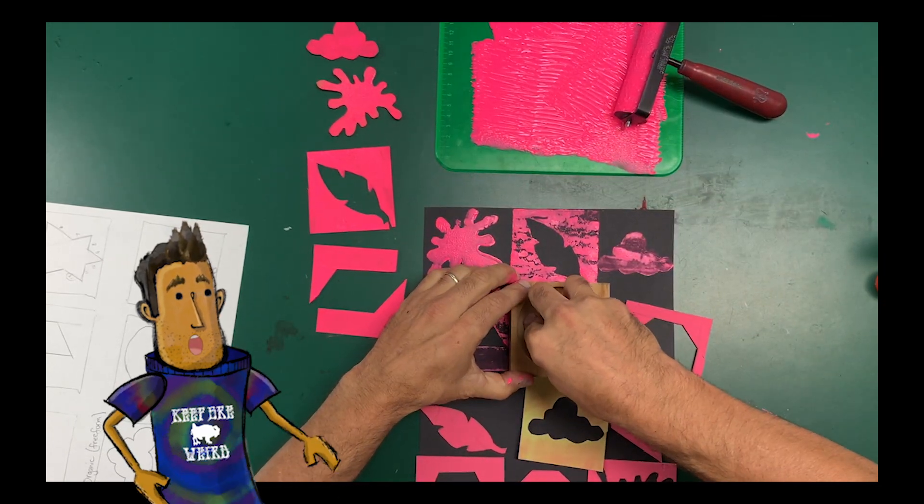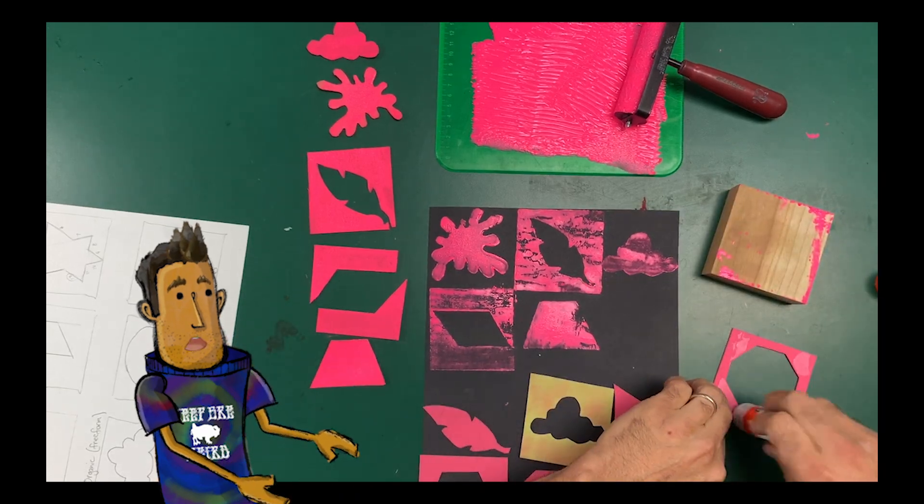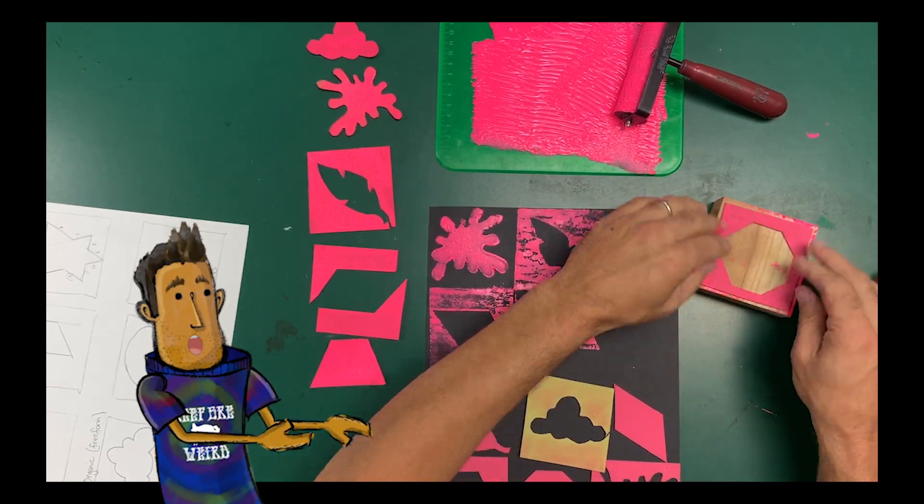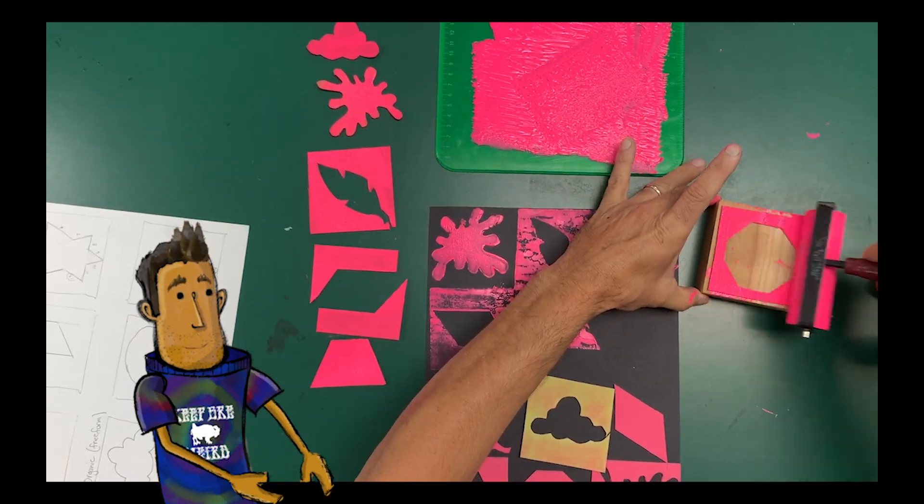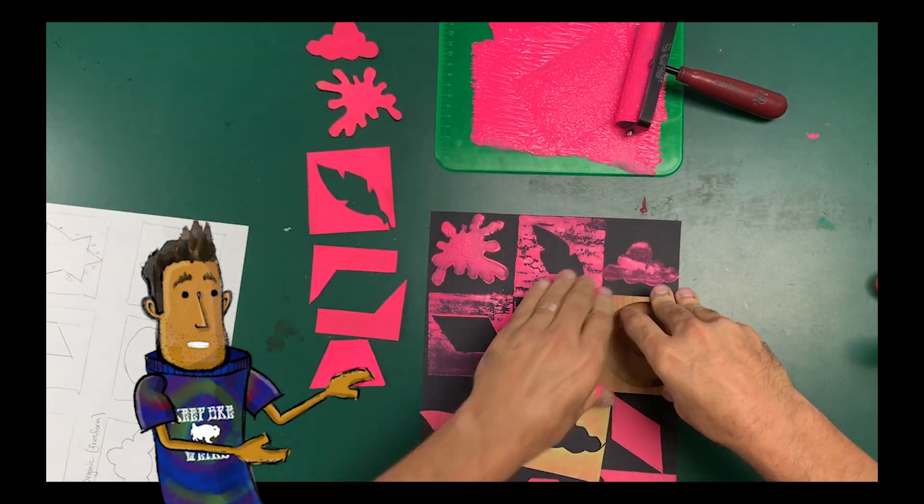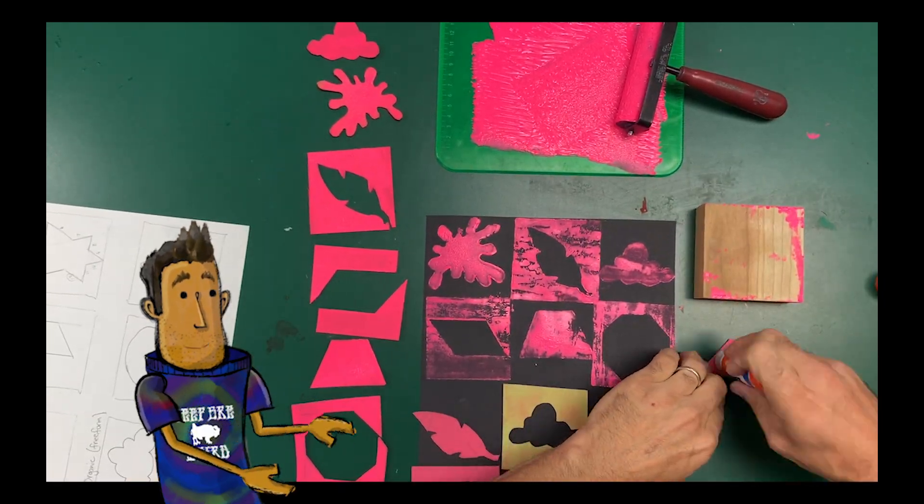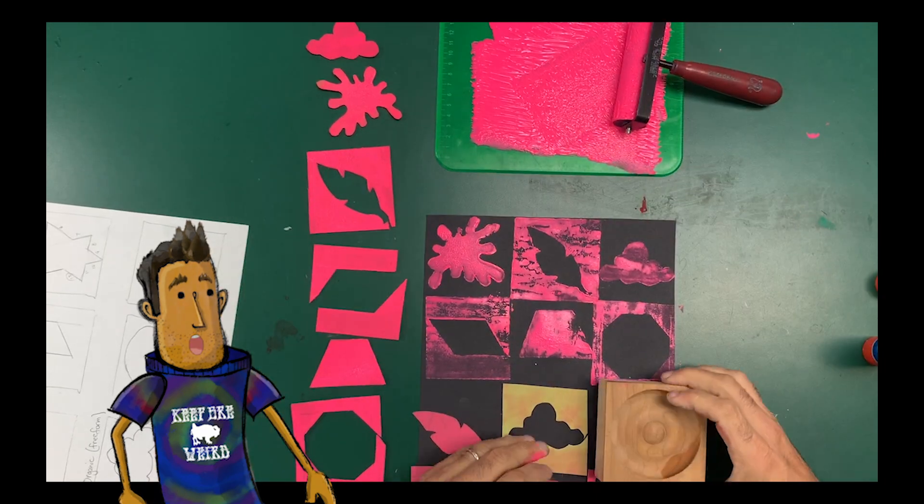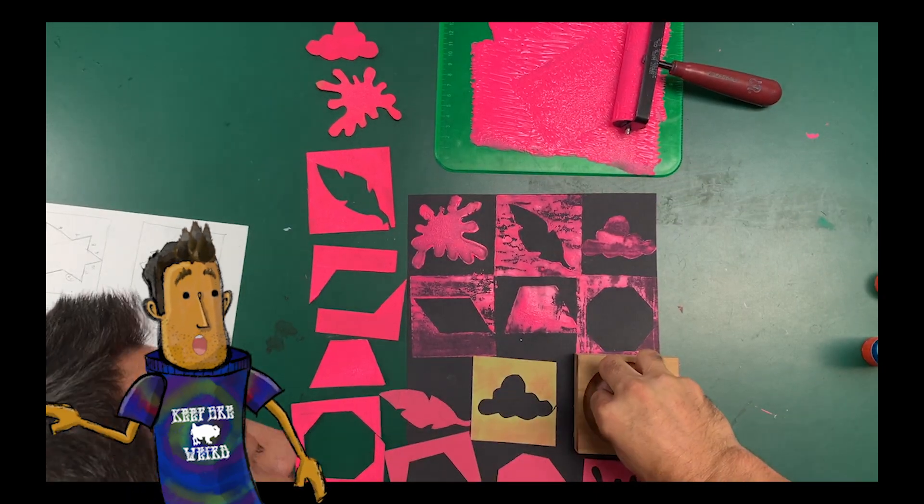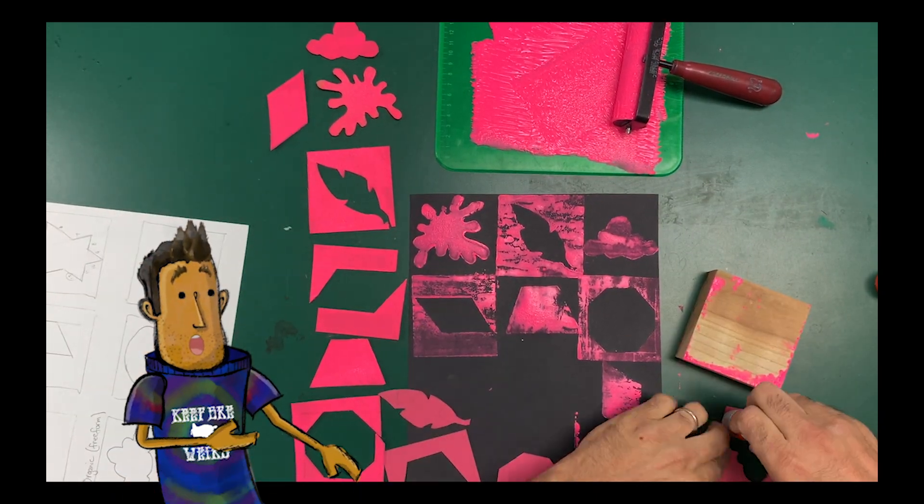Now, you might notice that sometimes in printmaking, there are parts that are lighter, and sometimes there are parts that are more colorful. And that's actually the beautiful part about printmaking, is that it's not all exactly the same. You can see that sometimes there are parts that are missing, and sometimes there are parts that are not.